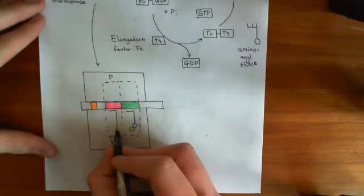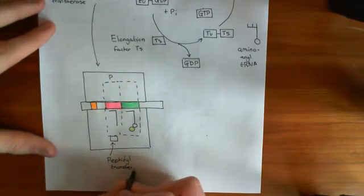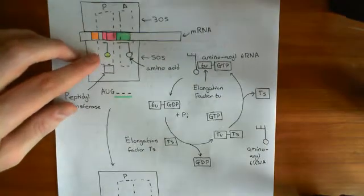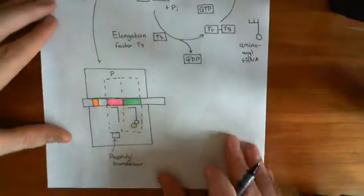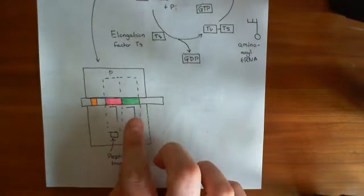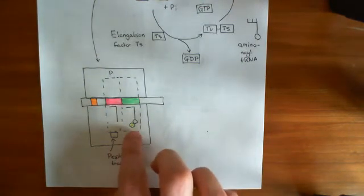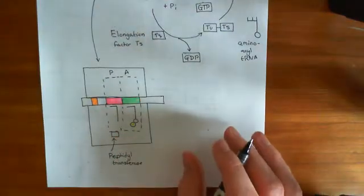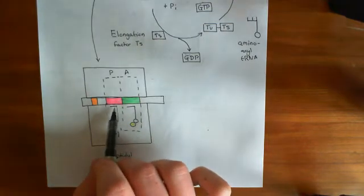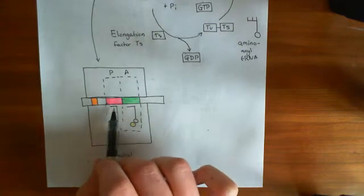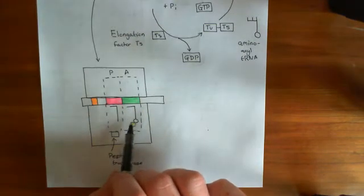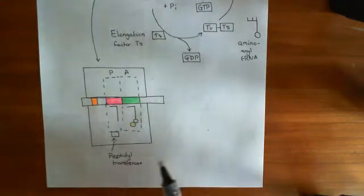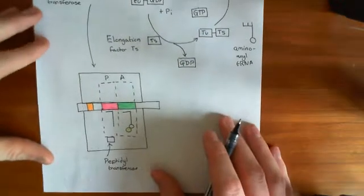In the case of this first transfer of the amino acid from this tRNA to this one, there was only one amino acid attached to the tRNA in the P site. But as the peptide grows, we're going to shift the ribosome over. So this aminoacyl tRNA with these two amino acids — this dipeptide attached to it — is going to be moved into the P site. Then another aminoacyl tRNA will come into the A site, and if we continue this process on and on, we'll build a polypeptide.